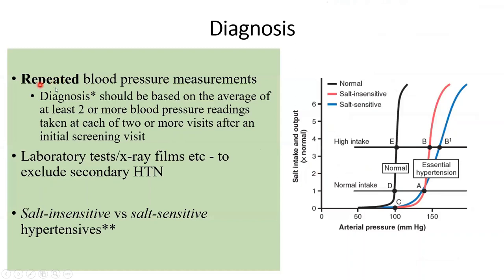For diagnosis, it is not just one higher reading of blood pressure that prompts you to label someone as hypertensive — there are protocols that should really be followed. It is most unfortunate to label people with hypertension based on single readings. Serial repeated blood pressure measurements are the way to go.